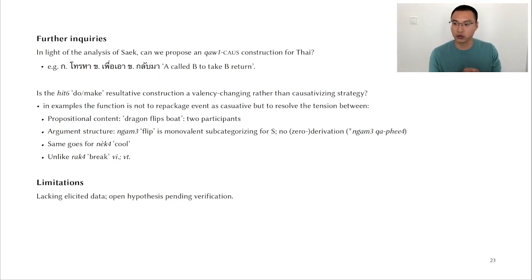And the second question for further research is whether or not the hít do make resultative construction is a valence changing device rather than a causativization strategy. So why do I say so? Well, in the examples that I have provided, the function of the resultative construction does not really seem to be to repackage the event as causative, but to resolve the tension between propositional content and argument structure. So in terms of propositional content, dragon flips boat has two participants. But the verb nɯm is monovalent. It subcategorizes for an S argument only, and there's no zero derivation. And the same idea applies to nɛ̀k cool. So these two verbs are not like the verb àdràp, which means to snap in Saek, which displays the argument structural alternation properties. So is it the case that the hít resultative is just a way to change the valency?